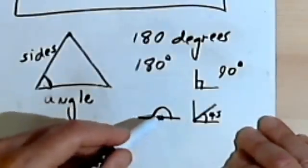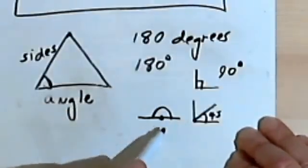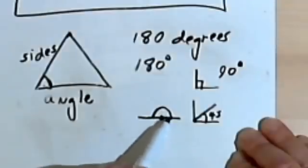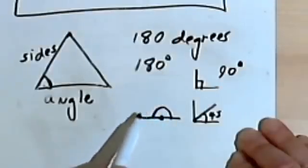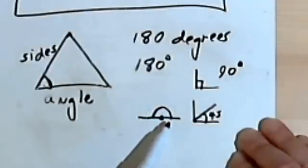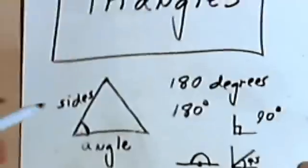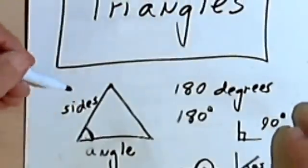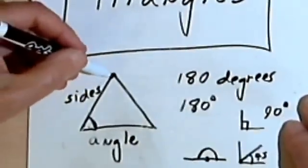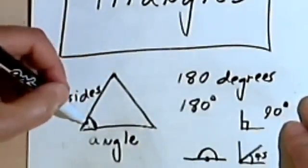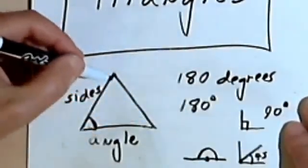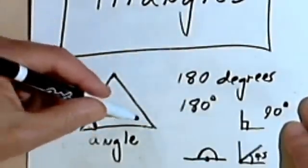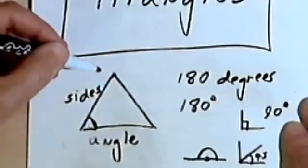If you think about it, 180 degrees is half of a circle, so a circle has 360 degrees. But to get back to triangles — the three angles of a triangle add up to 180 degrees.